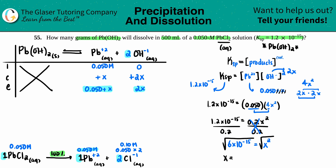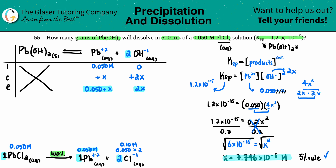x = 7.746 × 10⁻⁸ M. Now check the 5% rule: divide x by the initial concentration (0.050) and multiply by 100. That gives well under 1%, which is less than 5%, so the approximation was valid. The assumption passed.